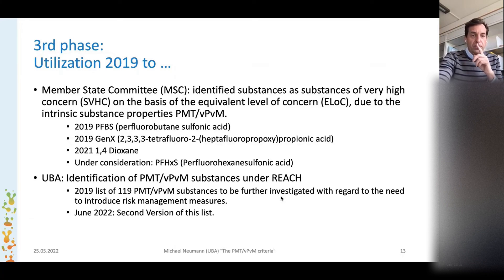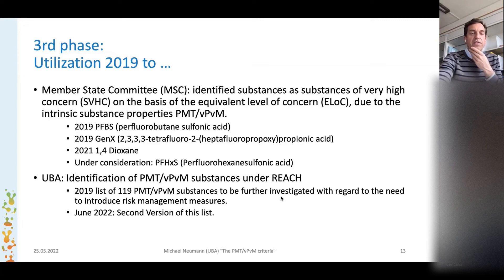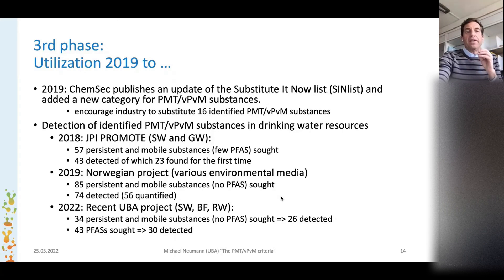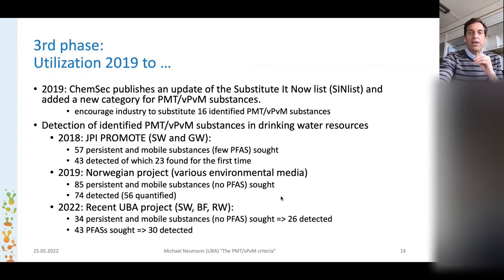We also used these criteria ourselves within the research project to identify PMT/vPvM substances registered under REACH. In 2019, we published a list of 119 substances and we will publish very soon an update — a second version of this list. In 2019, ChemSec also picked up our criteria and added a new category on their well-known SIN list, and they now encourage industry to substitute 16 identified PMT/vPvM substances.